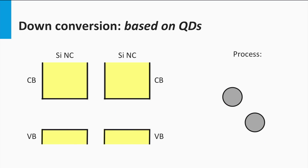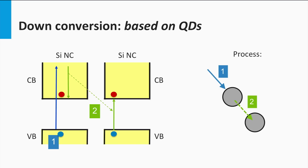Multiple exciton generation in an ensemble of quantum dots is quite similar. Again, in one particle an electron is excited into the conduction band, and this quantized energy package is transferred to a neighboring quantum dot, where a second electron is excited into the conduction band. If the charge carriers are separated and collected before they recombine, the result is that one photon is able to produce more than one collected electron.